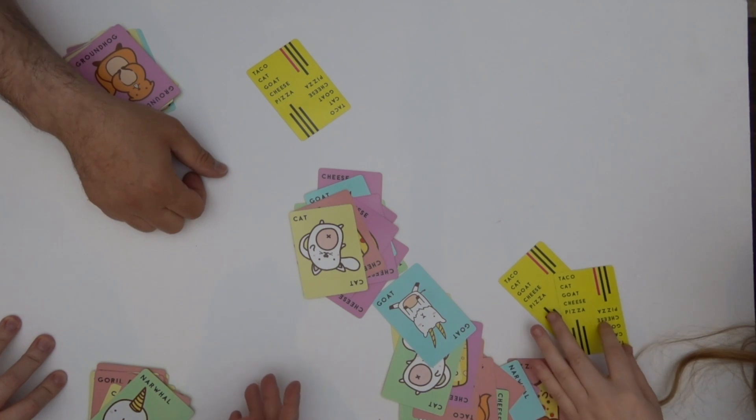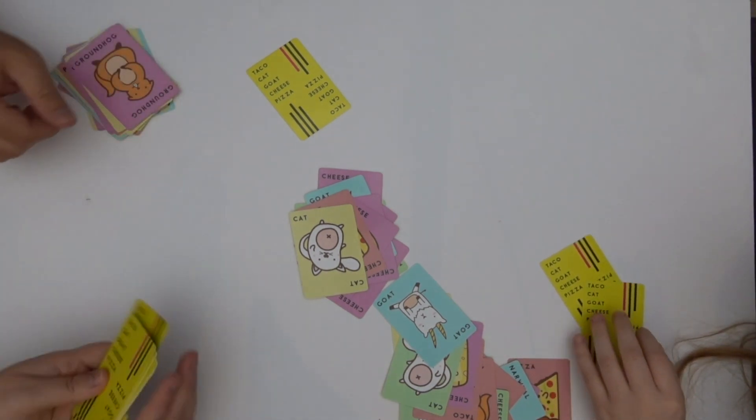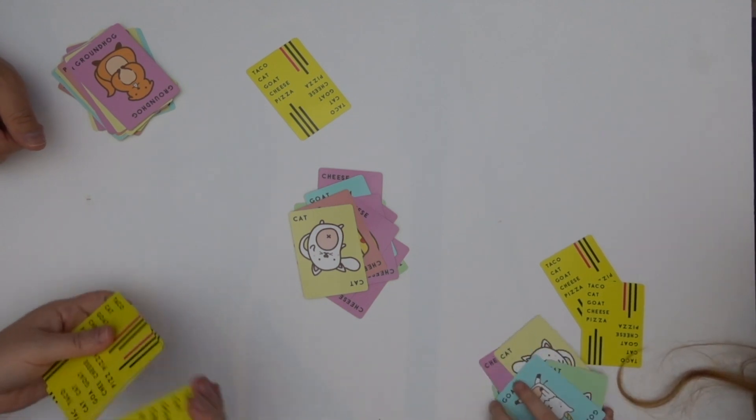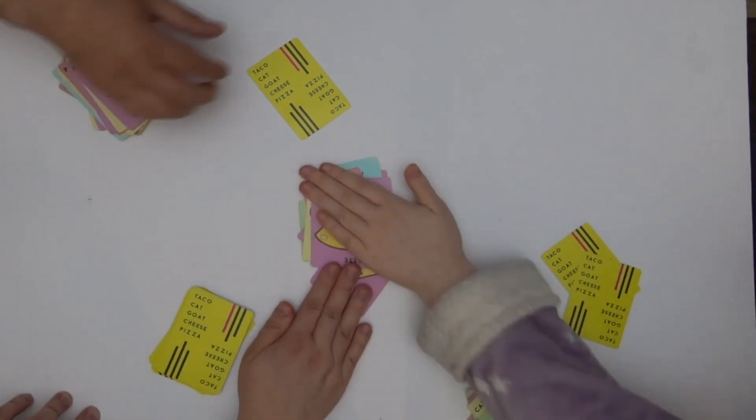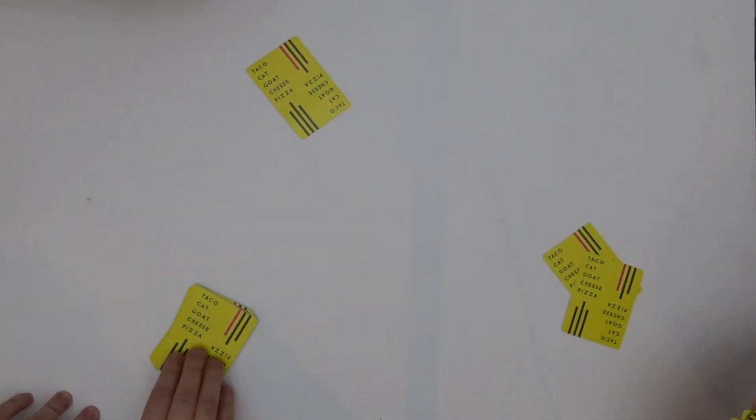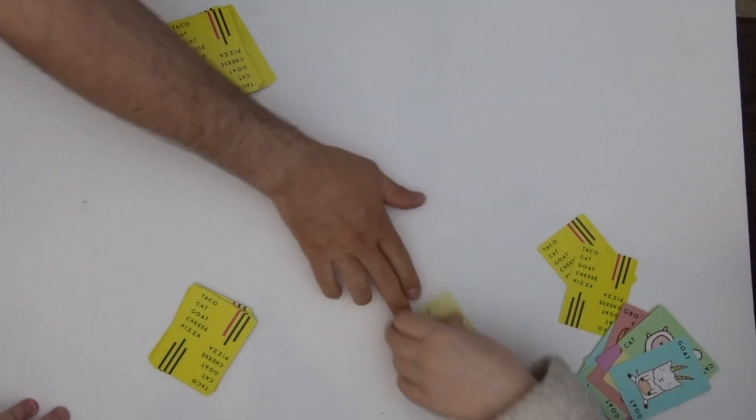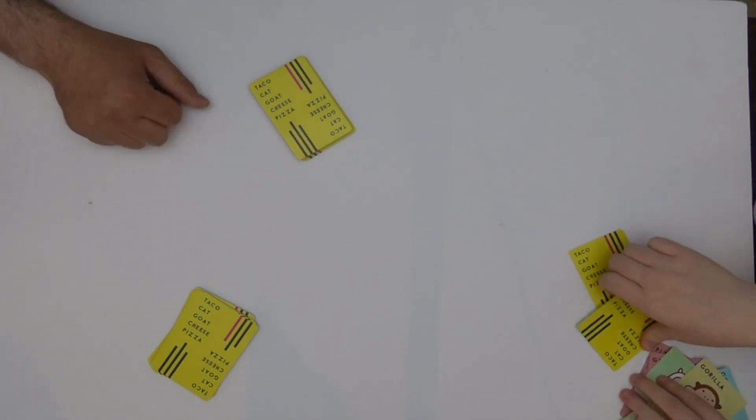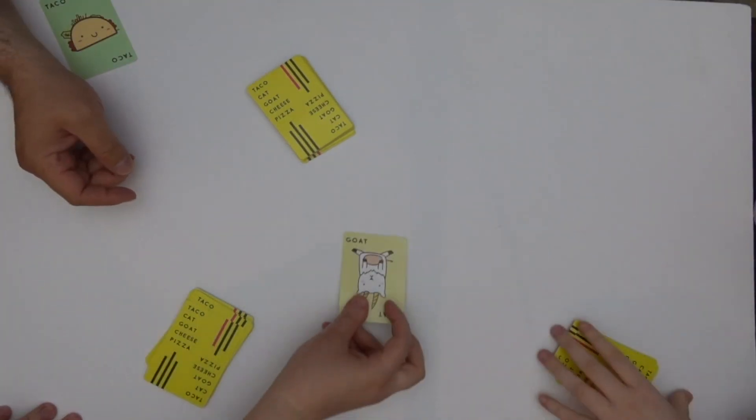Keep the rhythm going. Cheese, pizza, taco, cat, goat, cheese. I ran out. Shuffle them quick. I don't know how I ran out but I wonder if they're supposed to go on the bottom. Pizza! Taco.